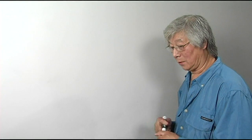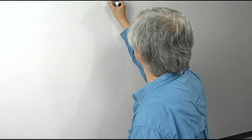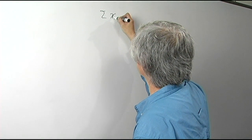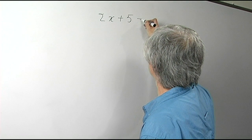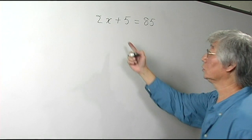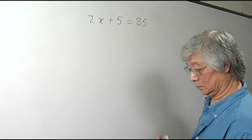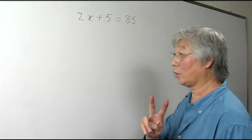Two-step equations are equations that involve two operations. Let me give you an example: 2x plus 5 equals 85. In order to solve for x, we need to use two operations.